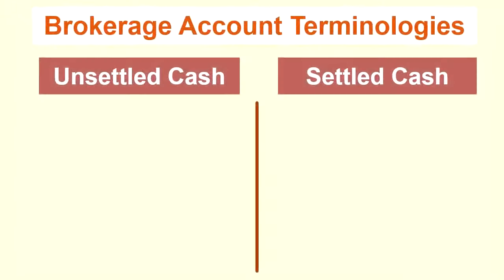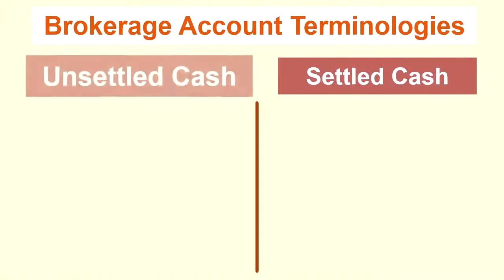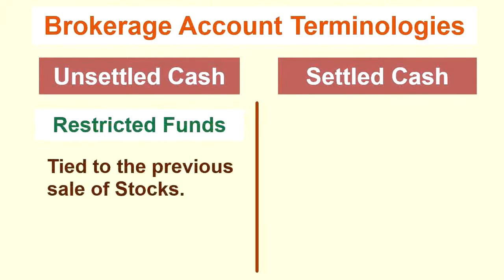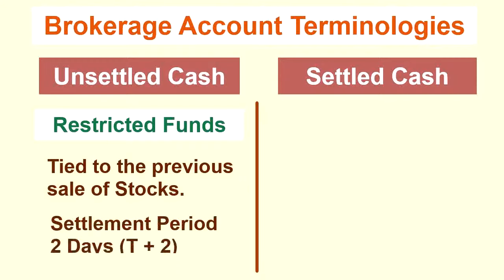Unsettled cash are restricted funds that are tied to the previous sale of a stock. Whenever you sell a stock, it takes 2 trading days for the transaction to finalize. During that period — from the time of the sale before the transaction is finalized — is known as the settlement period, referred to as T plus 2: the day of the transaction plus 2 trading days. During that settlement period, the funds are termed as unsettled funds or unsettled cash.